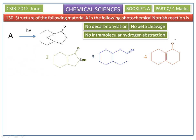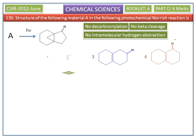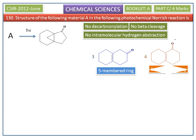Similarly, the second option also gives a 4-membered ring during simple alpha cleavage. Therefore, option 2 is also not the correct answer. But in the third and fourth options, it is possible to get a 5-membered ring fused with cyclohexane, because during alpha cleavage, ring contraction can give a 5-membered cyclic compound.